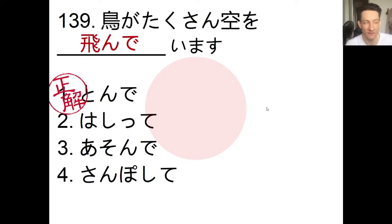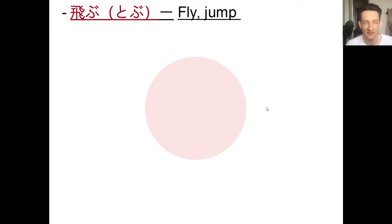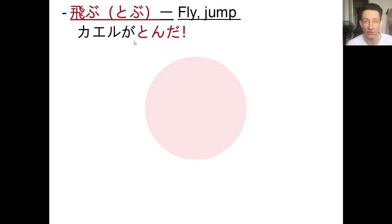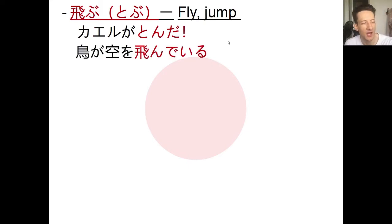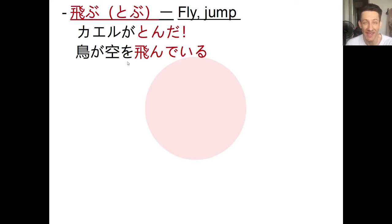Let's look more closely at tobu, which can mean to jump or to fly in English. A bird can be tonde iru — flying — and a rabbit might tobu too, but the rabbit is jumping, not flying. Also note: kaeru ga tonda — the frog jumped. And pay attention to the particle used with sora: we say sora wo tonde iru, not sora ni or sora de. When moving through a place, we use wo.